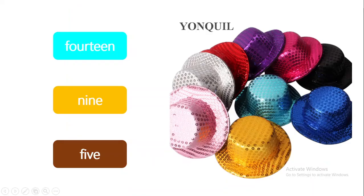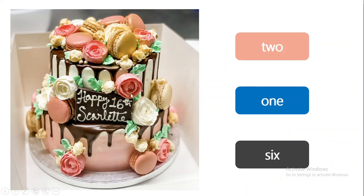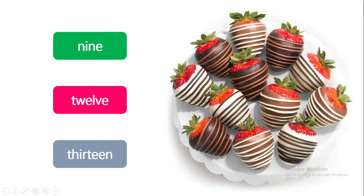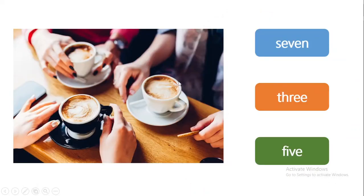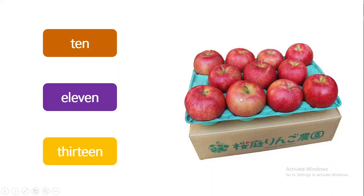Good job. Now let's look at the hats. How many hats here? 1, 2, 3, 4, 5, 6, 7, 8, 9. There are 9 hats. Excellent. And how many cakes here? There is 1 cake. Good. And how many strawberries? There are 1, 2, 3, 4, 5, 6, 7, 8, 9, 10, 11, 12. And how many apples? There are 11 apples.